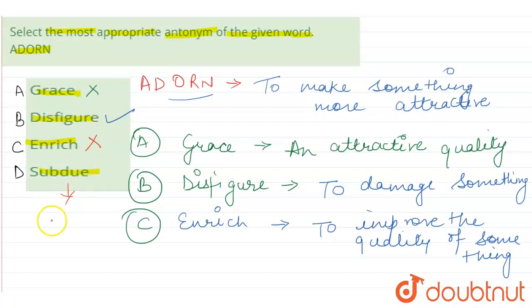D option is subdue. Subdue means to bring somebody under control, like something under control.